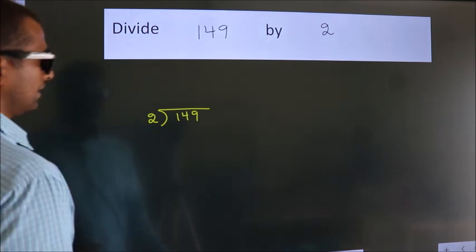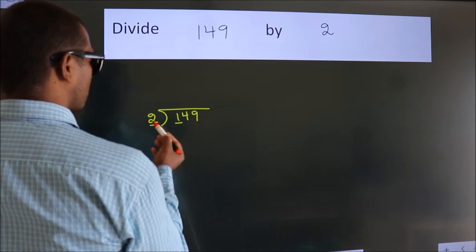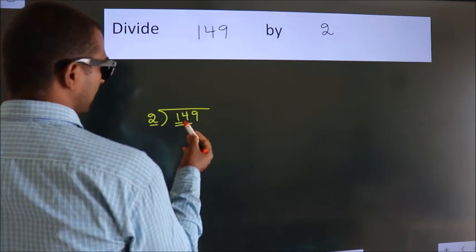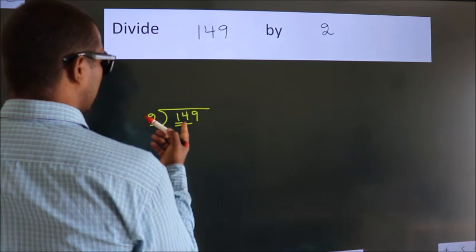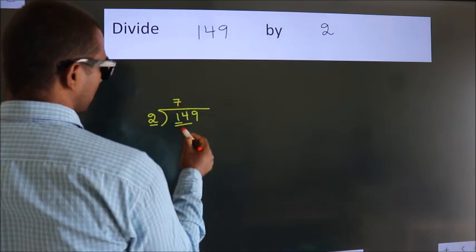Next. Here we have 1, here 2. 1 smaller than 2. So we should take 2 numbers, 14. When do we get 14? In 2 table, 2 sevenths, 14.